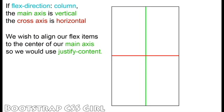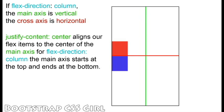Our FlexDirection is set to Column, and we would like to align our FlexItems to the center of our container vertically, so we will use the JustifyContent property. To align our FlexItems to the center vertically, we set JustifyContent to Center. This moves our FlexItems to the center of our main axis. With FlexDirection set to Column, the main axis is our vertical axis.